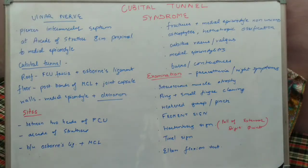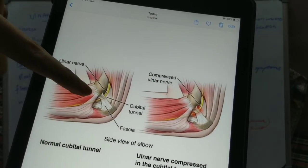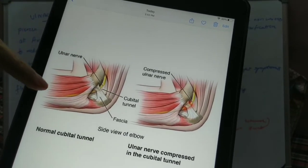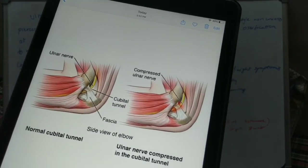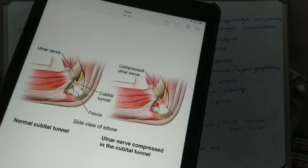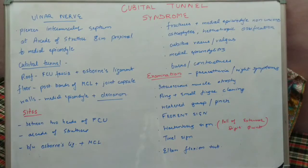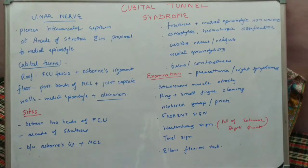There is also Tinel's sign: if we tap on the elbow joint at the level of the ulnar nerve over the medial side, it leads to a tingling or current-like sensation spreading over the entire ulnar nerve distribution. Another test is the elbow flexion test: if we ask the patient to keep the elbow in flexion for about one to two minutes, this leads to reproduction of ulnar nerve entrapment signs such as paresthesia.